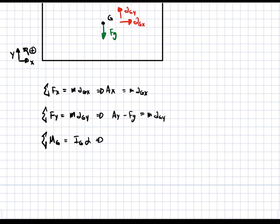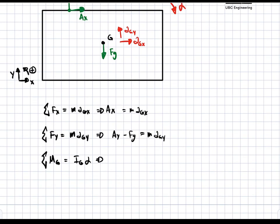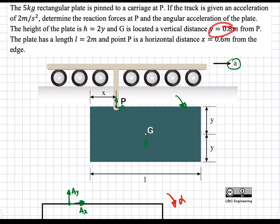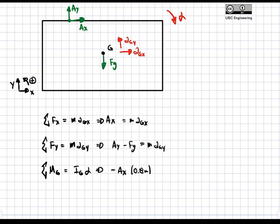Implementing the moment balance, only Ax and Ay create moments. We get negative Ax times 0.8 meters — negative because it makes everything spin clockwise and our positive direction is counterclockwise — and that distance is y, which is 0.8 meters. Then minus Ay times 0.4 meters, since this total distance is 1 and this distance is 0.6, the remaining distance is 0.4 meters. It's negative again because it makes it spin clockwise. This equals Ig·alpha.